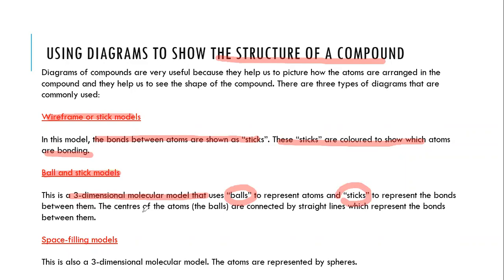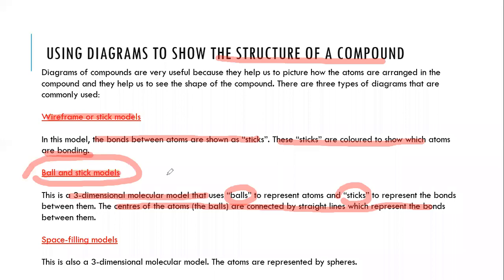Will there be a key for different atoms? Yes, there is going to be a key. For example, especially for a ball-and-stick model, they will give you a key — a page telling you these yellow colored ones with two holes are carbon, this one is hydrogen, this one is oxygen. Otherwise you cannot identify them.